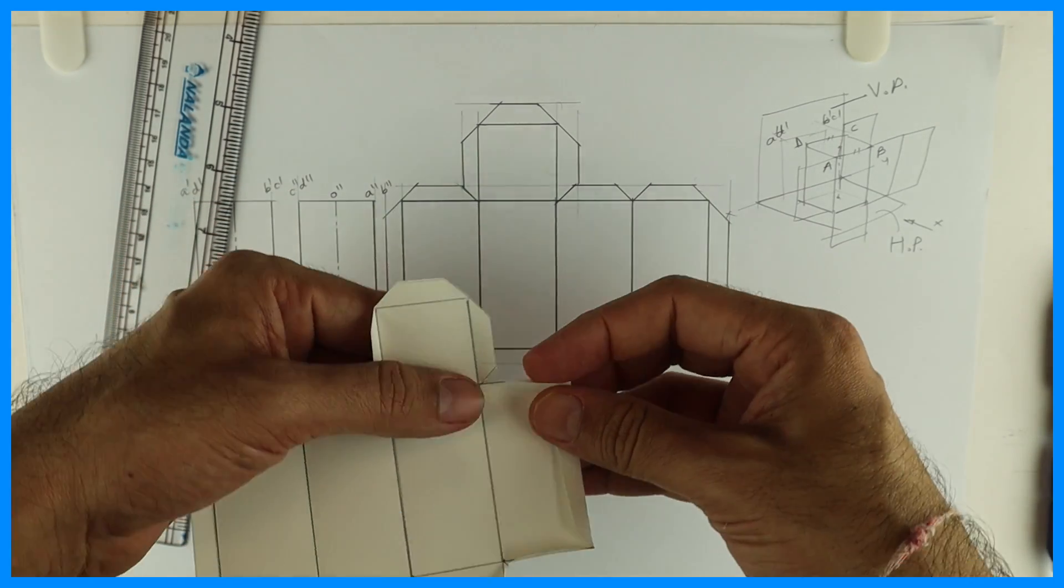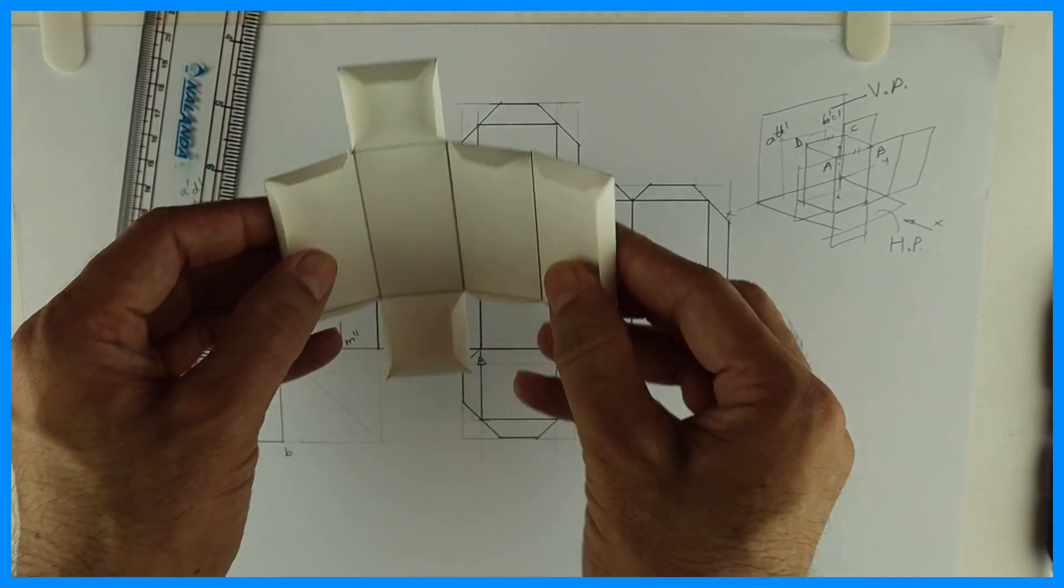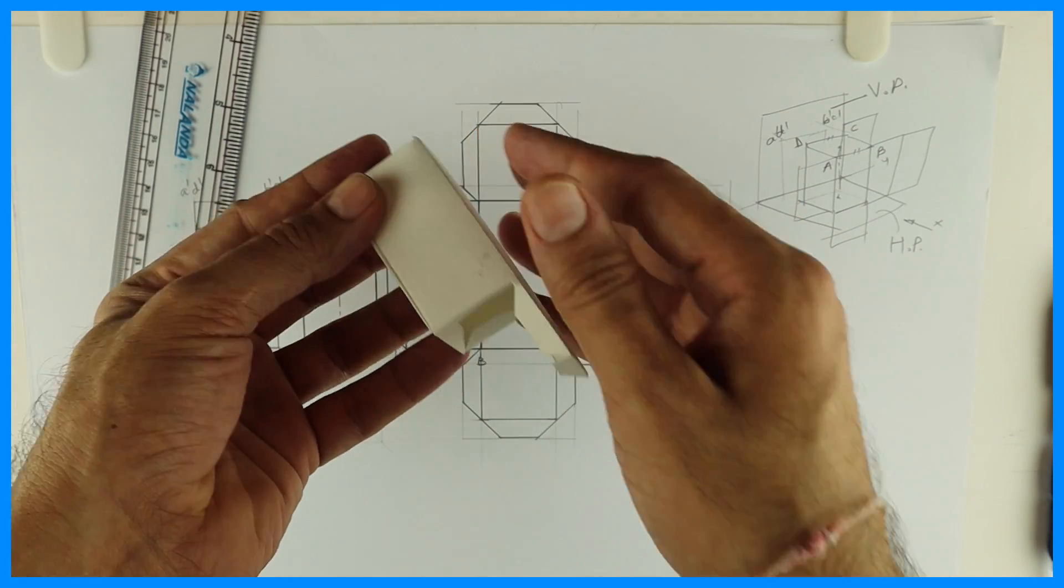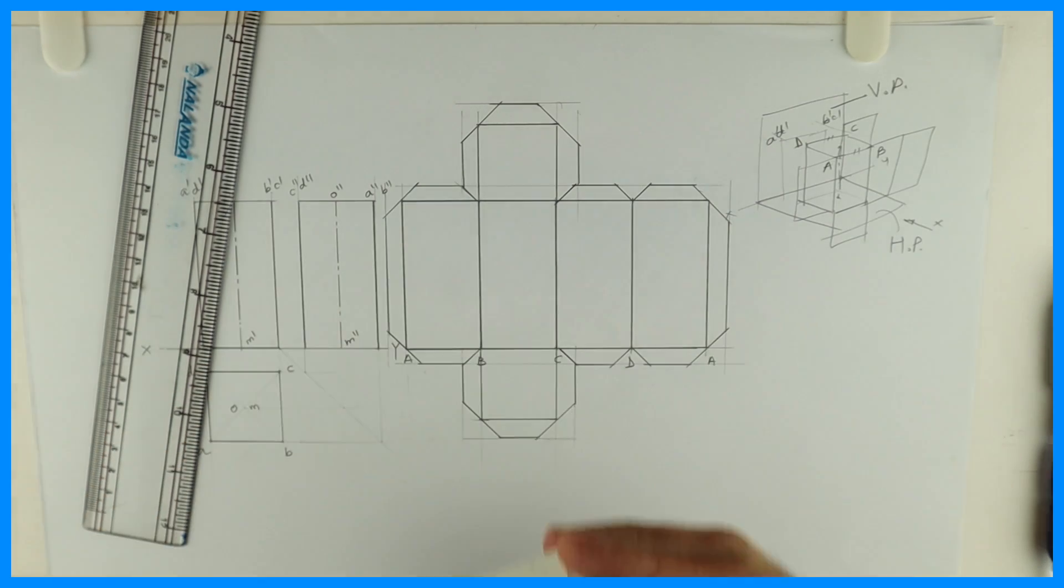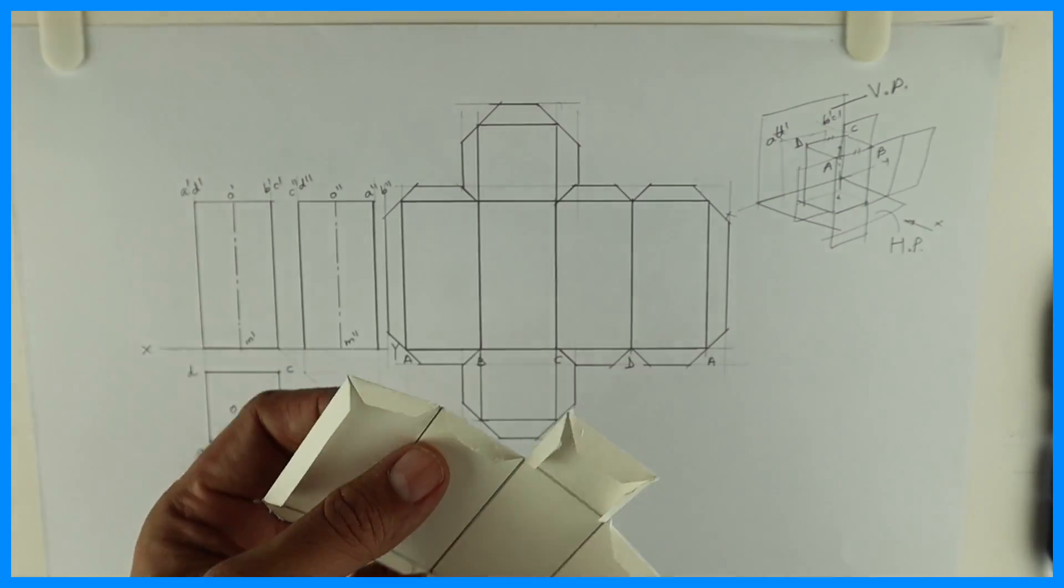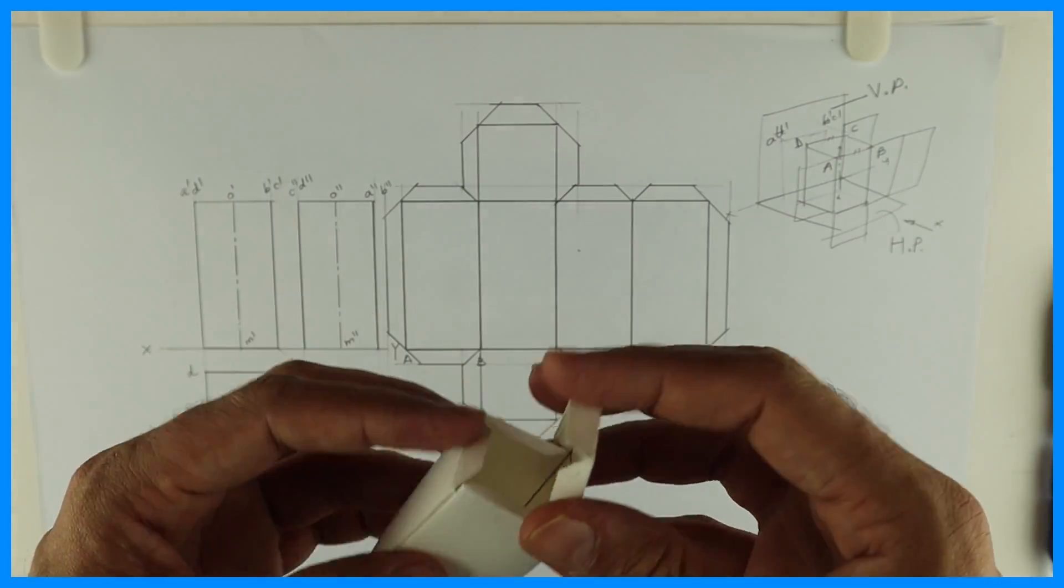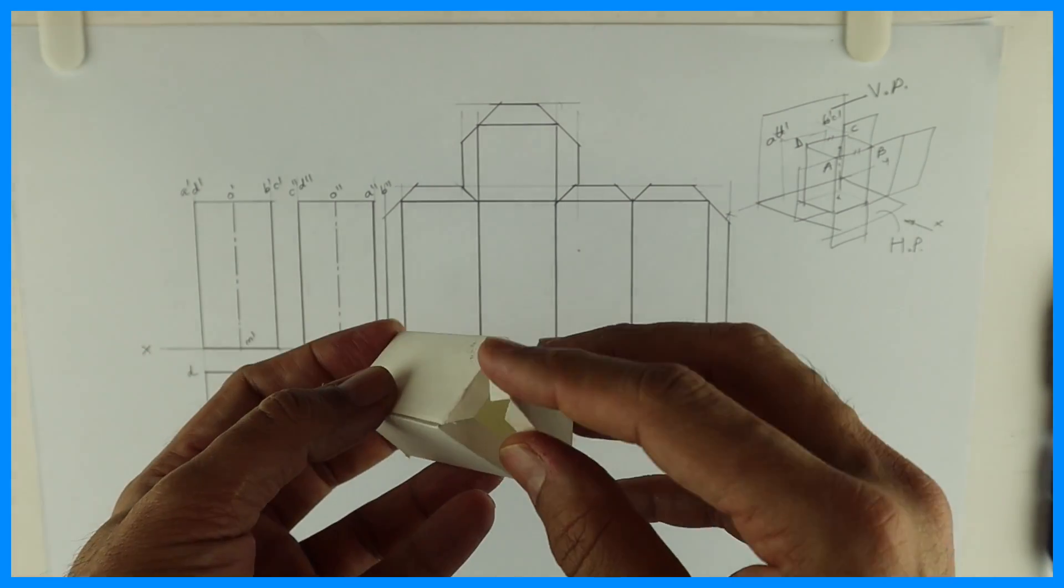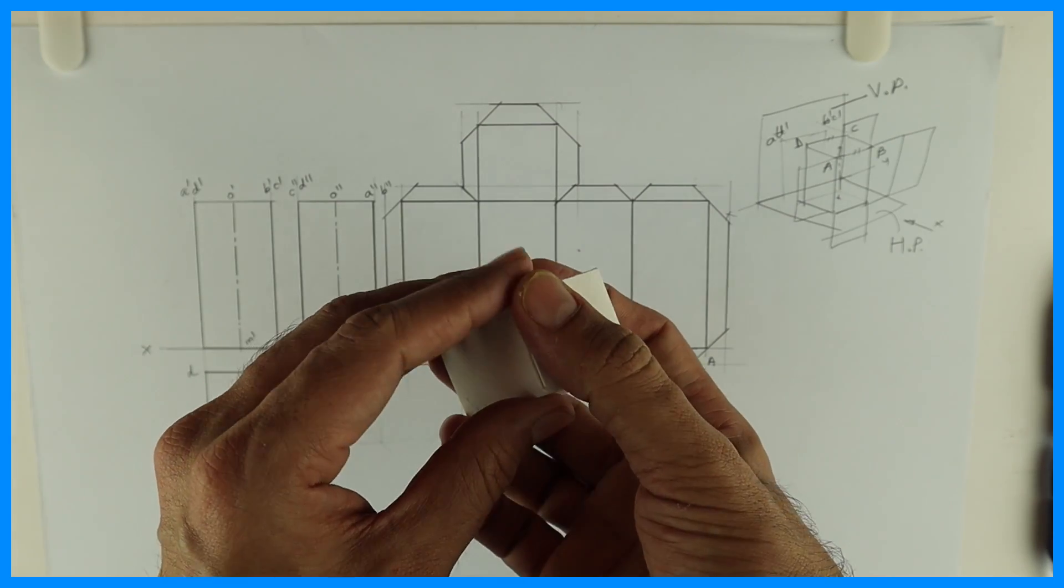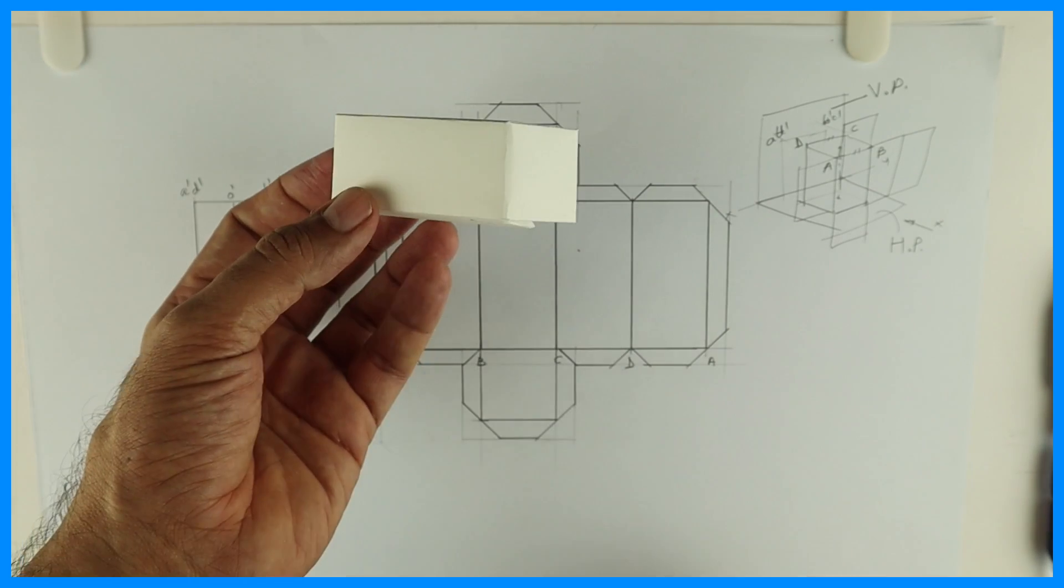See. Now what you can do? You can put a gum. And you can paste it like this. See this. So then it's a square prism. I'll just show it to you. See this. You apply gum on all these edges. And you can stick like this. See this.